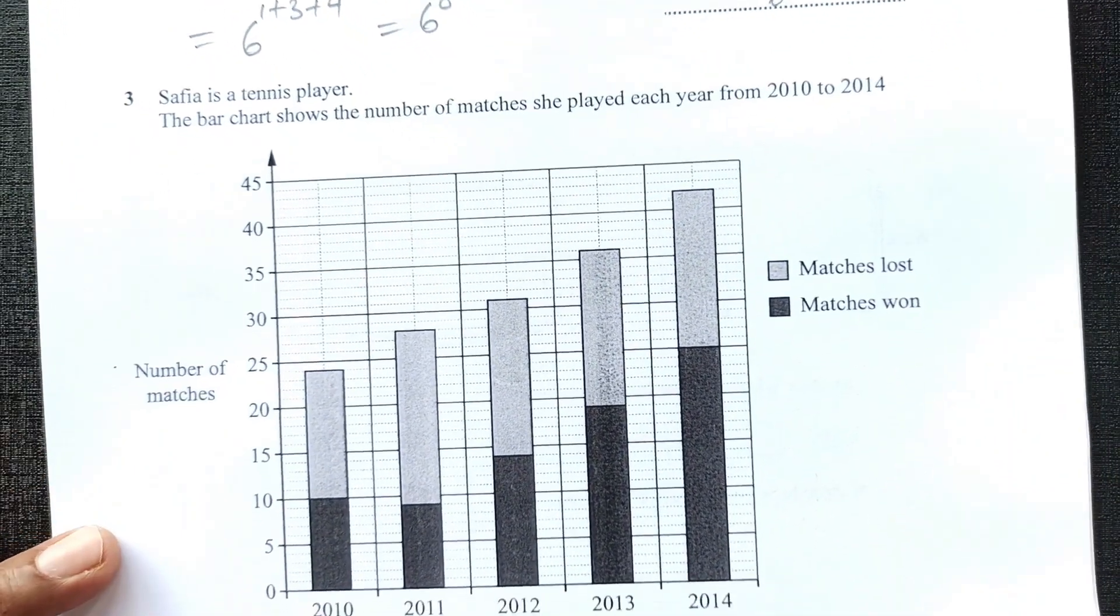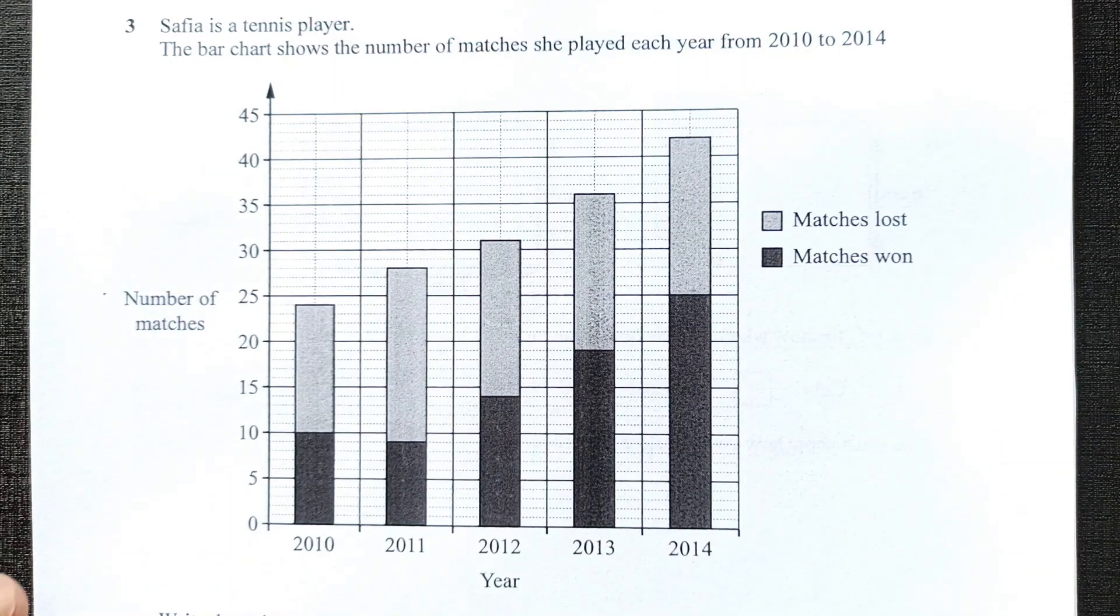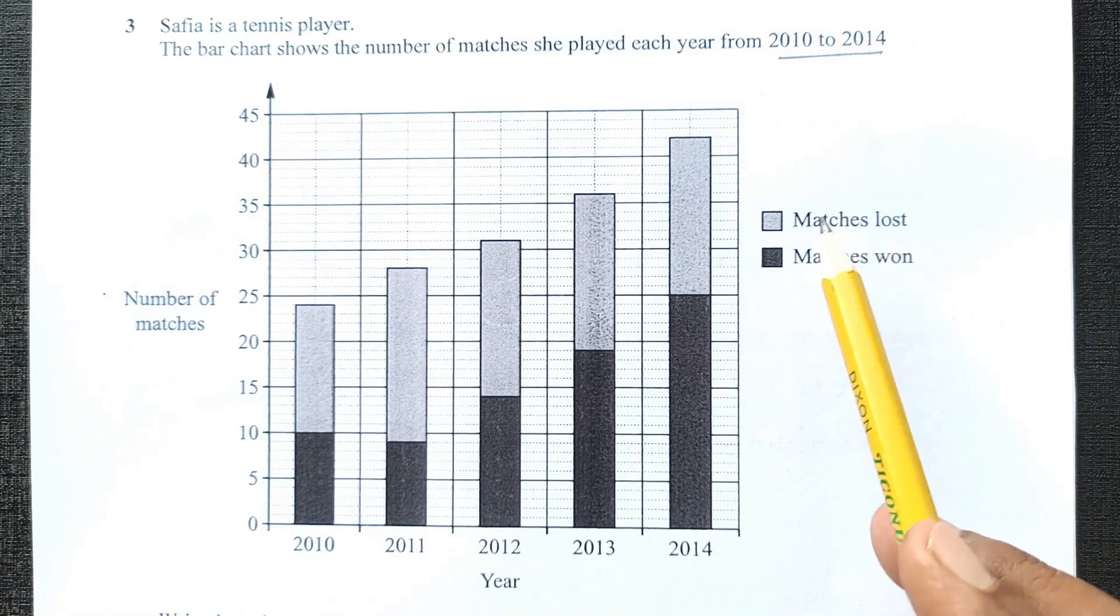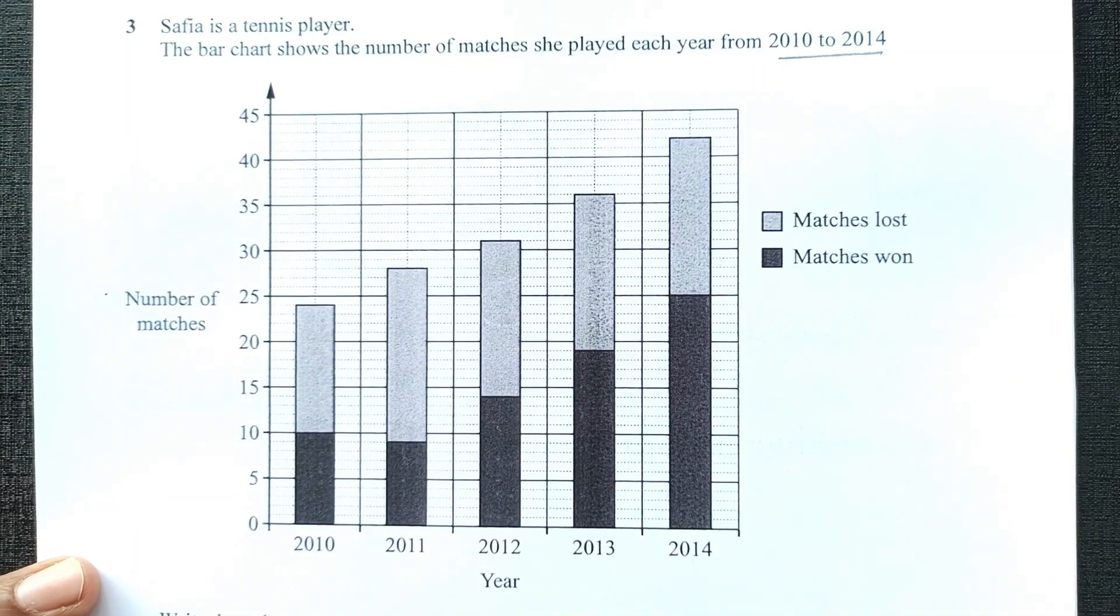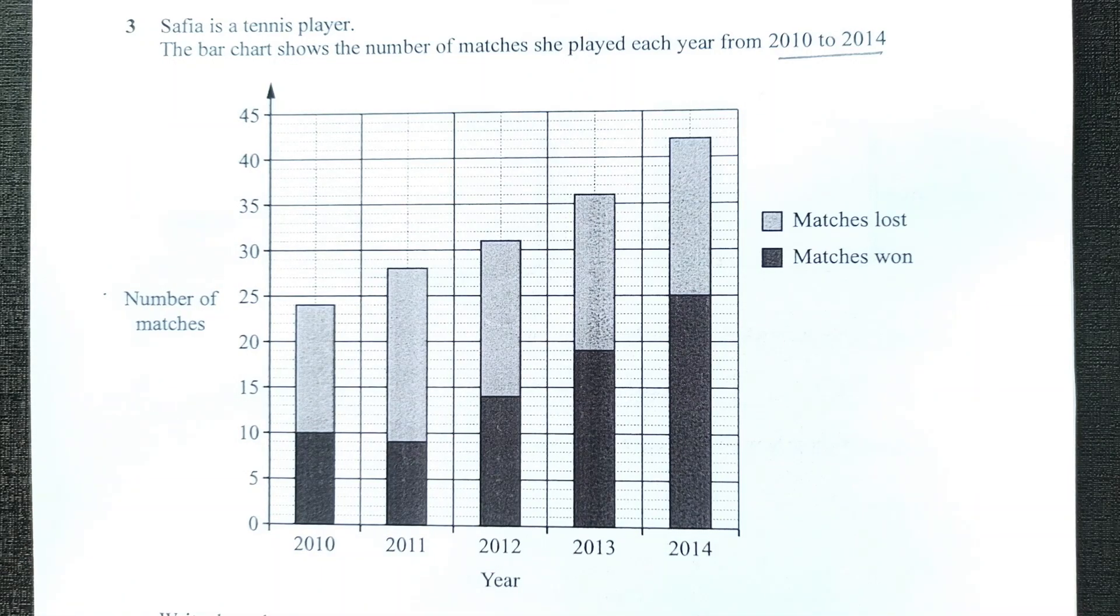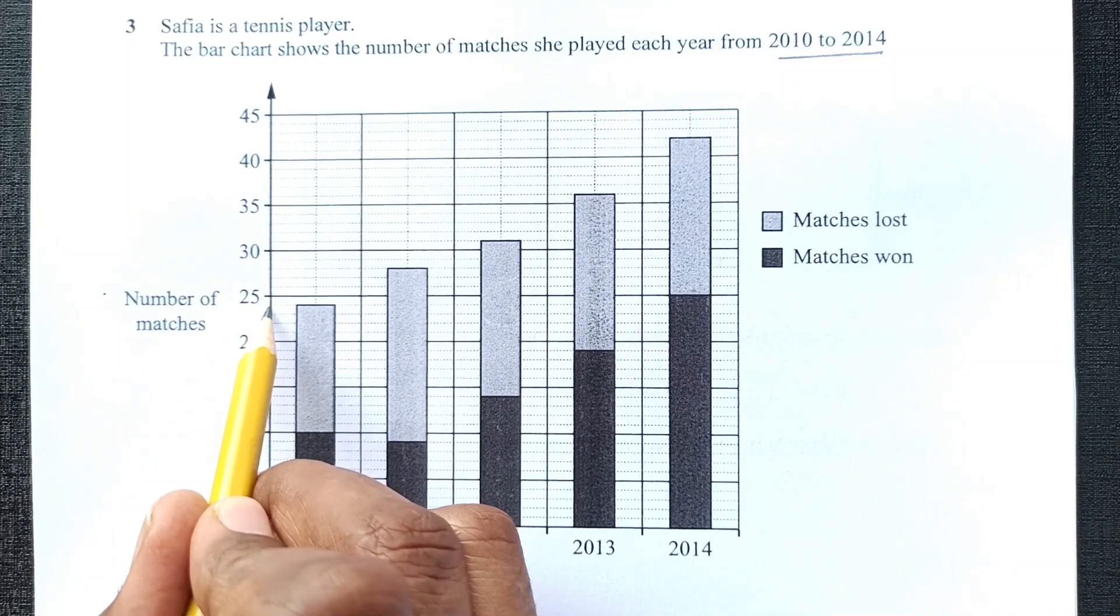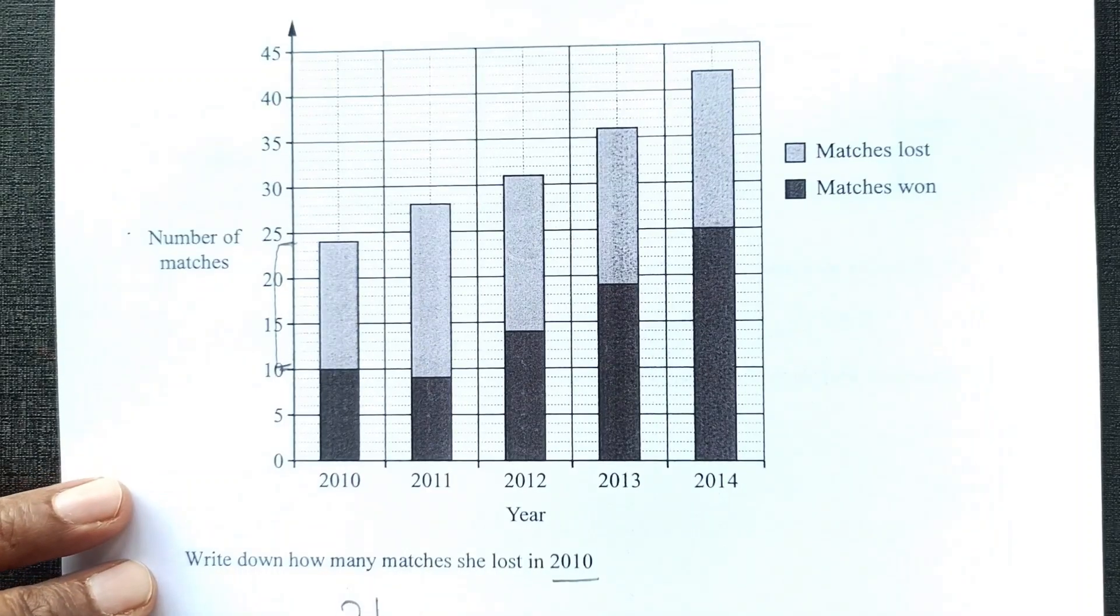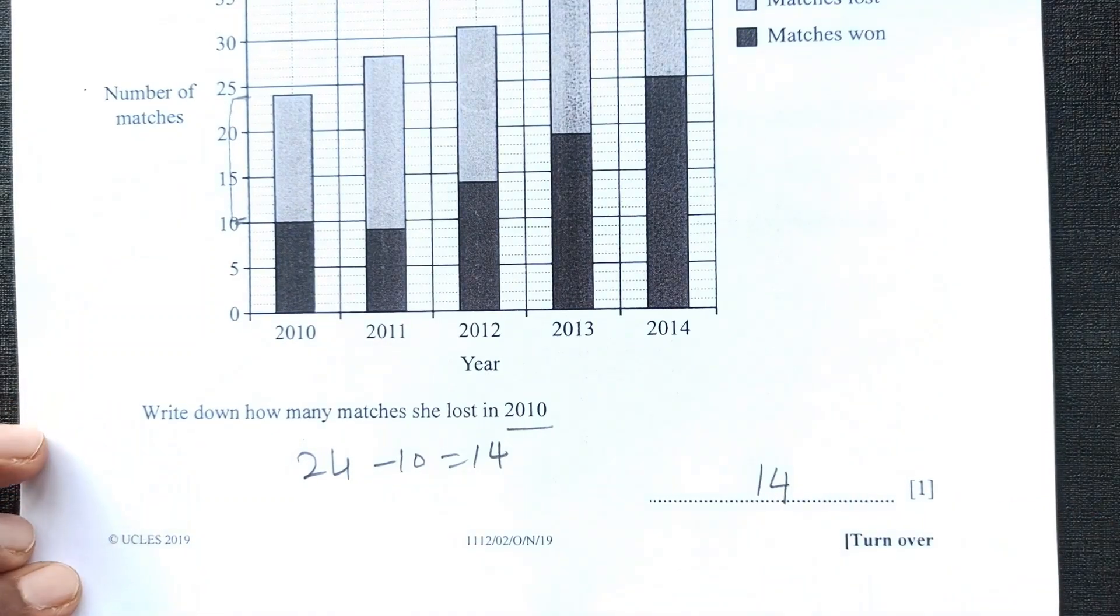Number 3. Safiya is a tennis player. The bar chart shows the number of matches she played each year from 2010 to 2014. We have here matches lost in grey and matches won in black. Write down how many matches she lost in 2010. In 2010 here you can see this is 10 and this is 24. This is between this one. So 24, it will be 24 minus 10 which is 14. That is the final answer for this question.